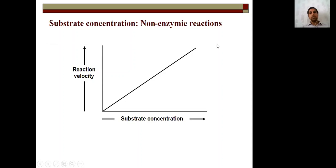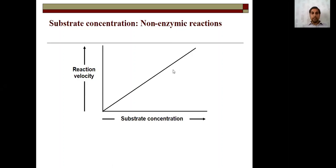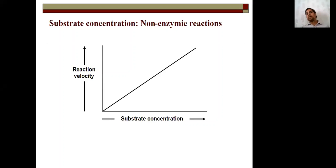Looking at substrate concentration in a non-enzymatic reaction: you can see that as we add substrate, gradually the optical density (OD) increases and the graph is linear. If we run a normal standard, increasing the concentration of glucose slowly produces a linear graph, meaning velocity increases proportionally with substrate concentration.